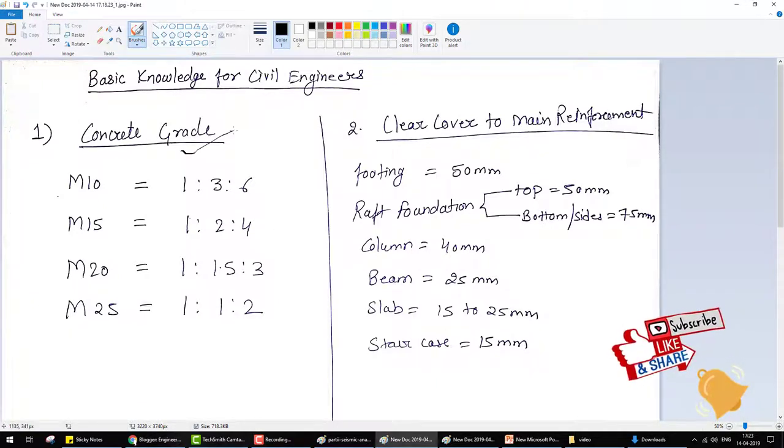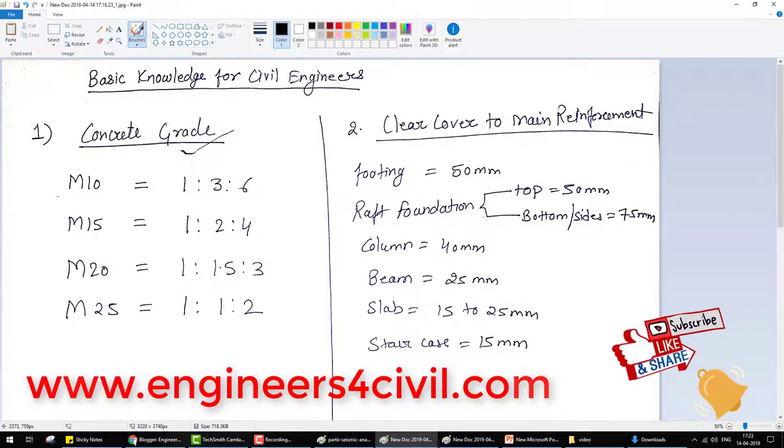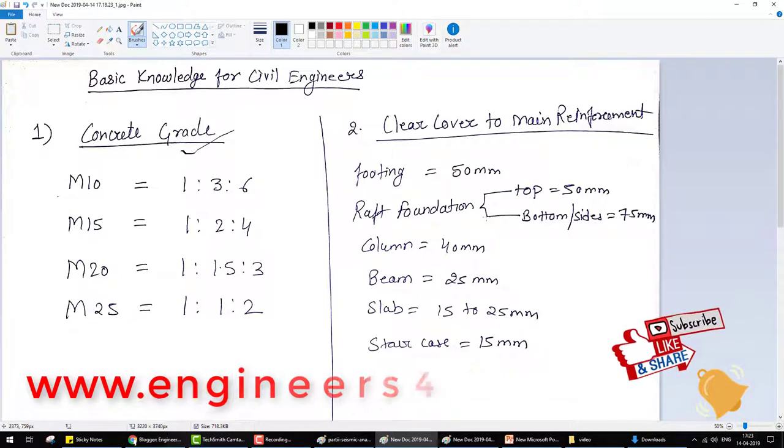Clear cover to main reinforcement: top is 50mm, raft foundation top is 50mm and bottom inside is 75mm, column is 40mm, beam is 25mm, slab is 15 to 25mm, and staircase is 50mm. If this video helps you, please like and subscribe for future videos and visit my website.